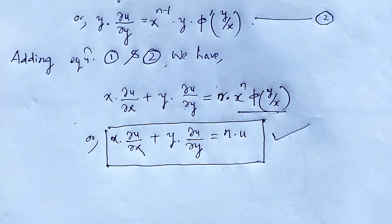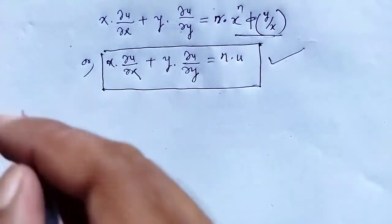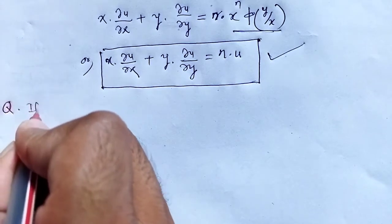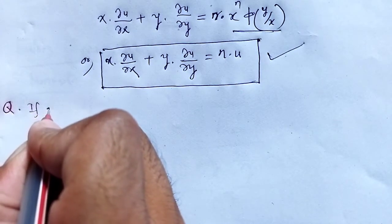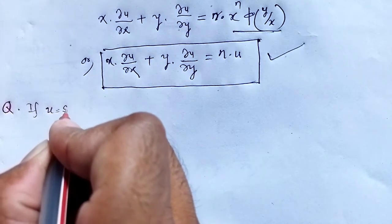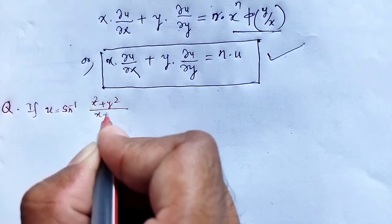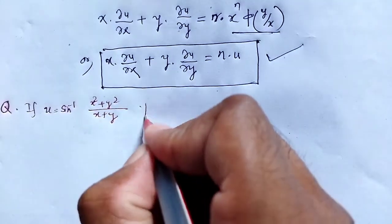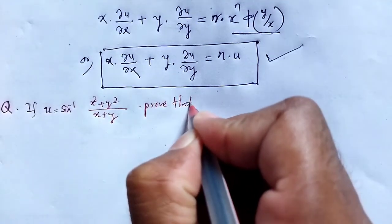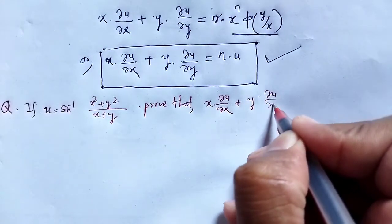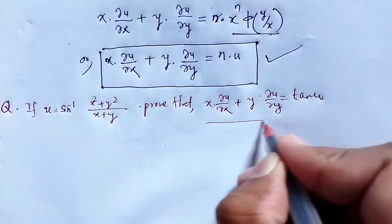Now let us take an example in which we apply Euler's theorem and find our solution. Question number 1: if u = sin⁻¹[(x² + y²)/(x + y)], prove that x·(∂u/∂x) + y·(∂u/∂y) = tan u.